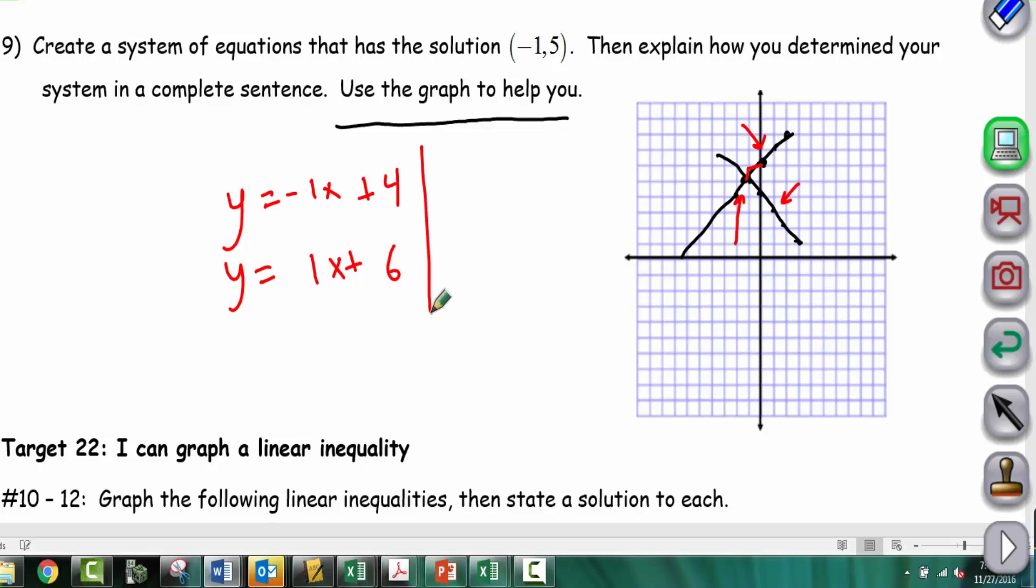Another way, completely separate from the graphical approach, is to pick equations like x + y and x - y, then plug in (-1, 5) to see what you get. So -1 + 5 = 4, and -1 - 5 = -6. These two equations, x + y = 4 and x - y = -6, have the same ordered pair solution. Either method works.